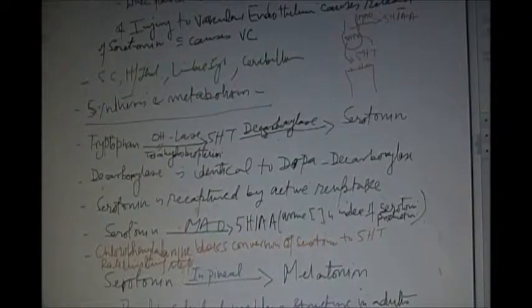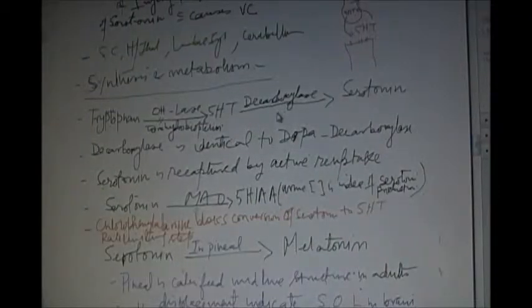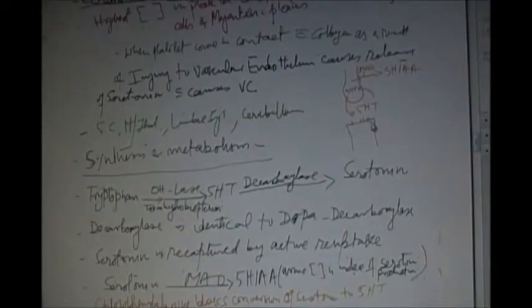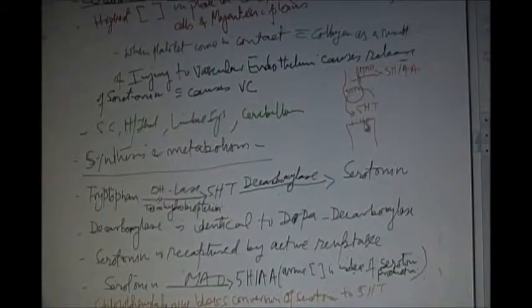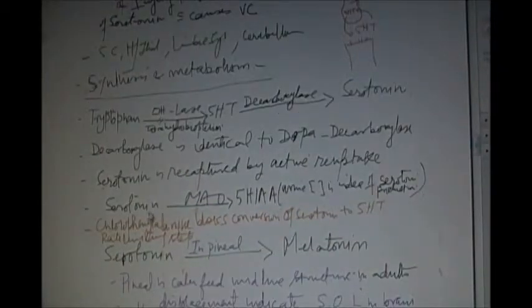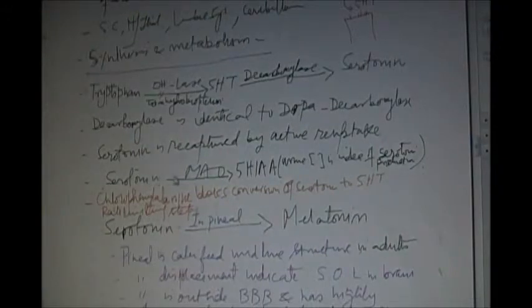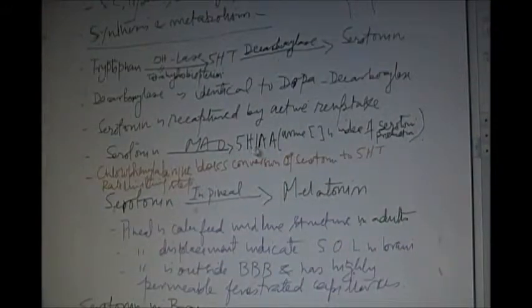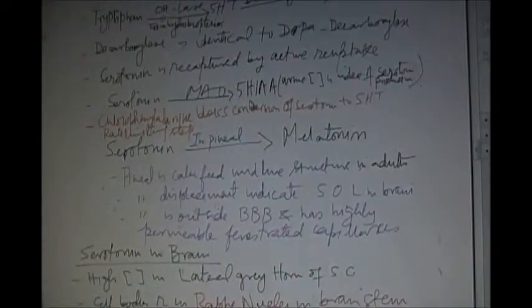This decarboxylase is identical to dopa decarboxylase and the serotonin is recaptured by the reuptake mechanism in the presynaptic terminal like the other catecholamines. And there serotonin is metabolized by MAO like catecholamines to 5-HIAA, 5-hydroxyindoleacetic acid. And the excretion of 5-hydroxyindoleacetic acid in urine is an index of serotonin production.